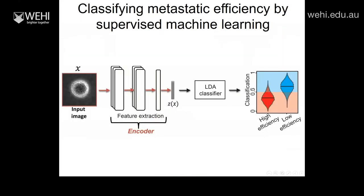We then took each image, plugged it into the network, got the vector representation, and used a simple LDA classifier to distinguish between high and low metastatic efficiency for each cell. At the single cell level we could distinguish very nicely between high and low metastatic cells, and since for each tumor we have many cells, we were very good at distinguishing between high and low metastatic patients. We could even validate this experimentally — we took melanoma cell lines the model had never seen, used it to predict which were more or less aggressive, validated that in mice, and our prediction held.